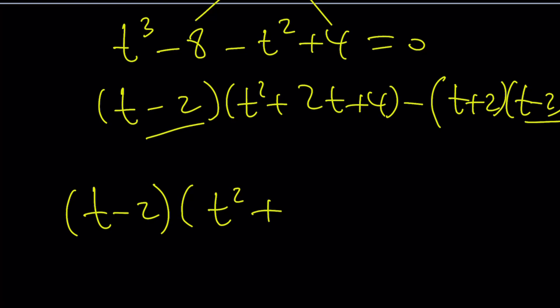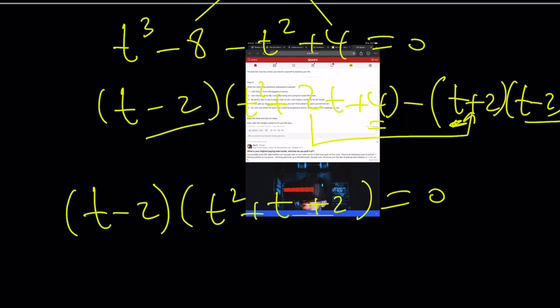Then t minus 2 take out. You're going to get t squared plus 2t plus 4. That's going to give us t squared plus 3t because we're going to have an extra t from here, and plus 4. Actually, that's not right. It's going to be t squared plus 2t plus 4 minus t plus 4. So, it's t squared plus t plus 2 equals 0. Obviously, you're not going to get real solutions from here, but that's perfectly fine.